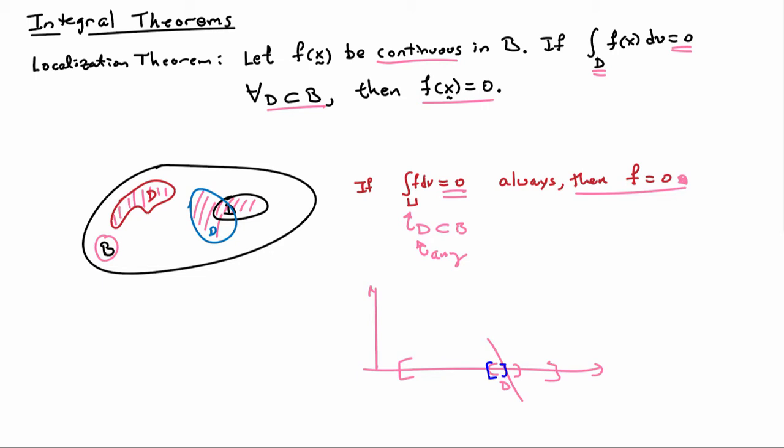So a function that slices through going plus and minus isn't going to satisfy the hypothesis of the theorem. So in that case the f is not going to be equal to zero but if I'm always getting zero no matter what subset d I pick that means that the function is basically going to be zero.